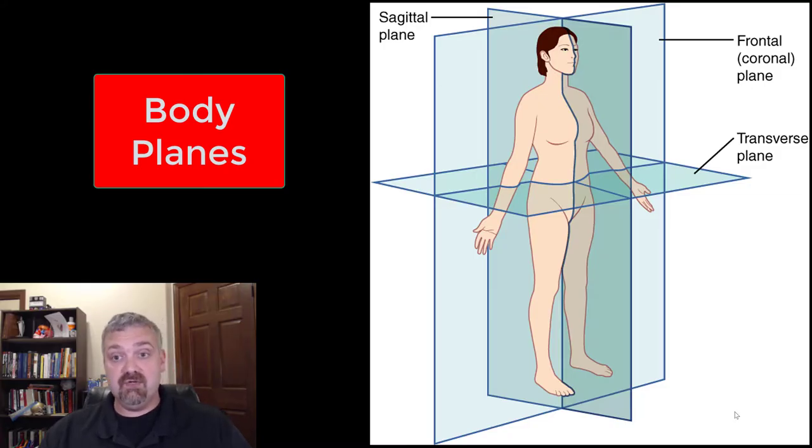So the key is that humans are three-dimensional objects, so we need the multiple planes, the X, Y, and Z axis to actually orientate ourselves.